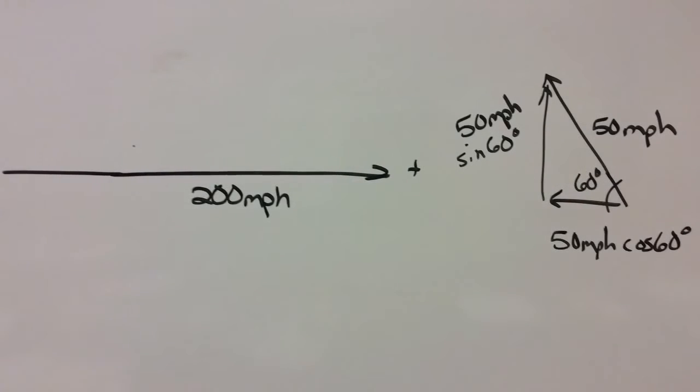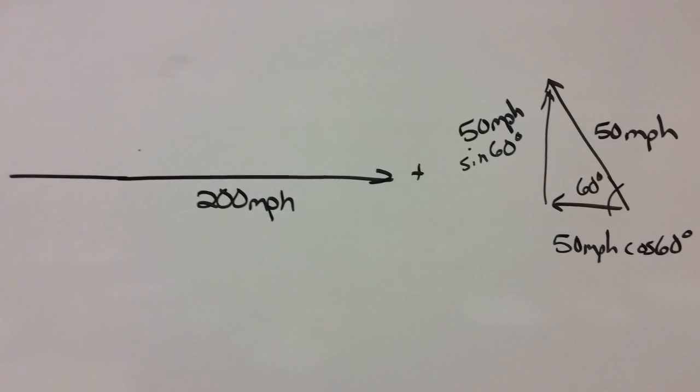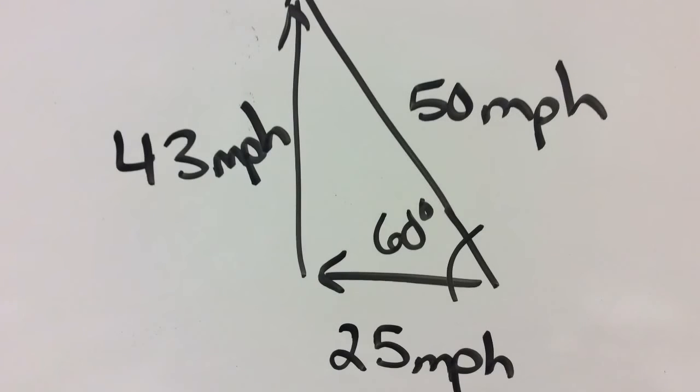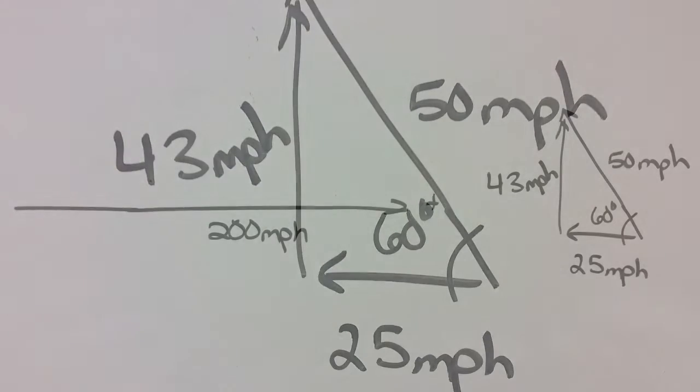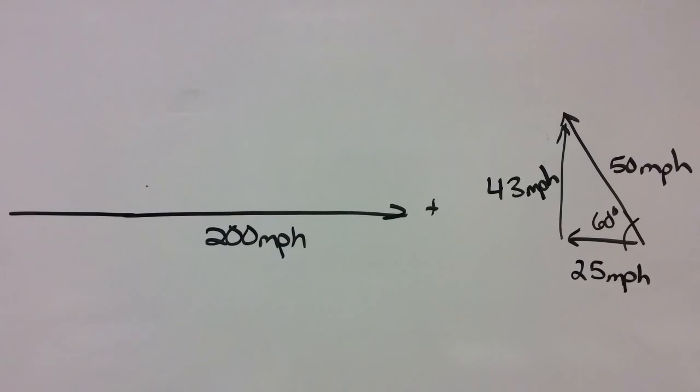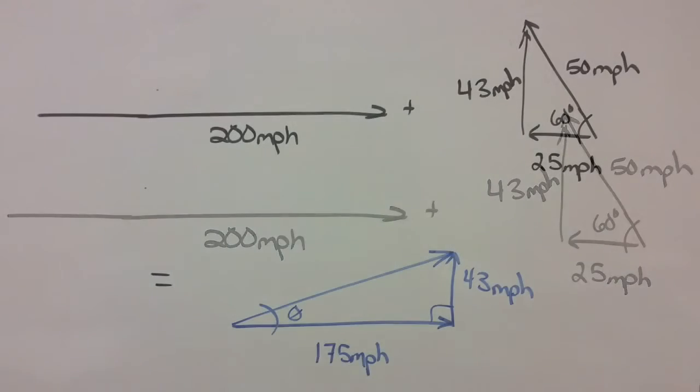First you have the 200 miles an hour, it's all positive x. And the 50 miles an hour split into its two components: 50 cosine 60 degrees and 50 sine 60 degrees gives you those two values, 25 miles an hour and 43 miles an hour. The 25 miles an hour and 43 miles an hour replace the 50.